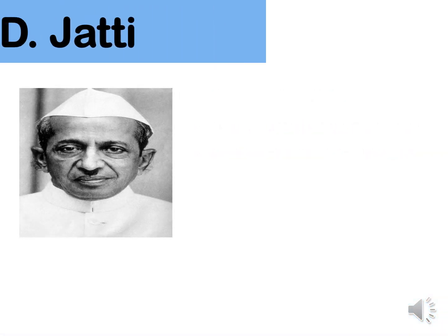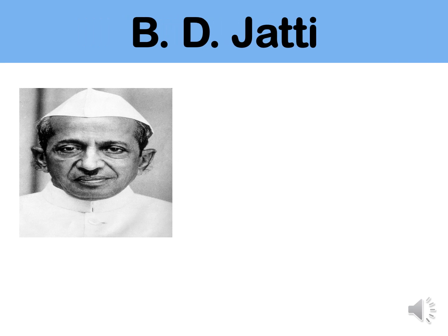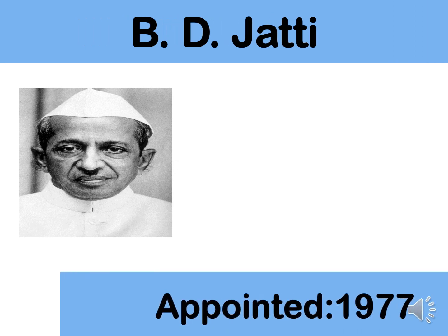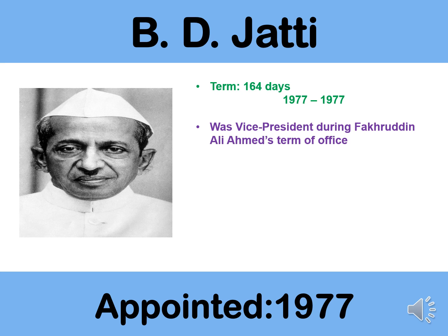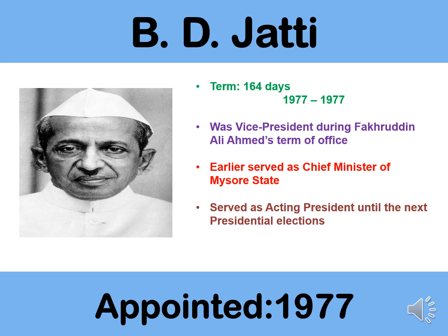The next president was B.D. Jatti. He was an appointed president, appointed in 1977, and served a term of 164 days. He was the vice president of India during Fakiruddin Ali Ahmed's term of office and had earlier served as the Chief Minister of Mysore State. He served as acting president until the next president was elected.